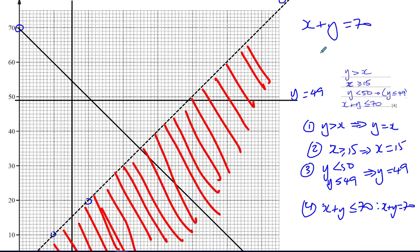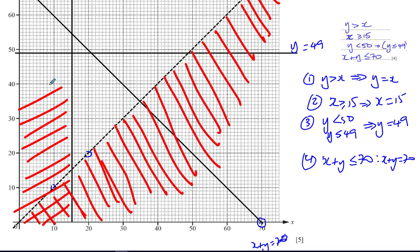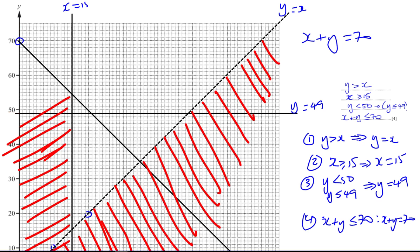The next inequality is X ≥ 15. This is the line X = 15, and we want what's to the right of it, so we're going to shade what's to the left of it — this whole region where X is less than 15.